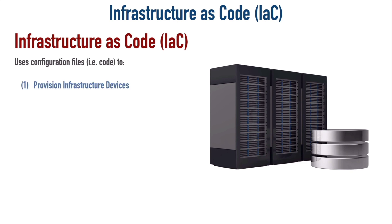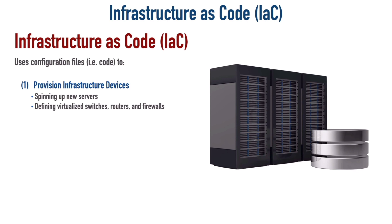IAC can provision infrastructure devices. After all, we can spin up virtual servers, define virtual switches, routers, firewalls. We can do that manually, or we can just have this configuration file — this code — that does it for us. That way, if I want to spin up another server with identical settings, I've got the code to do that. It's not as prone to errors, it gives us more consistency, and it makes it a lot quicker.